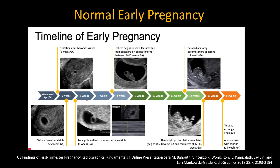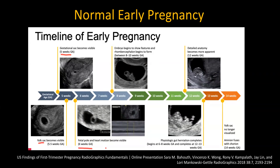This is the normal timeline of an early pregnancy. The first structure that you're going to see in the endometrium is the gestational sac, visible at about five weeks. After that, you'll see the yolk sac, and then at about six weeks, you should be able to see a fetal pole with heart rate.